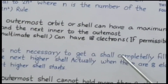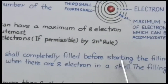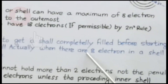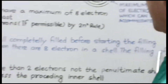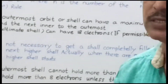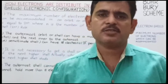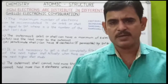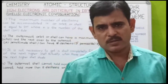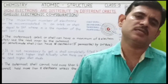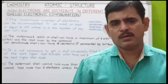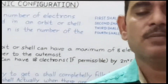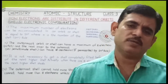Bohr का तीसरा नियम: it is not necessary to get a shell completely filled before starting the filling of the next higher shell. Actually, when there are 8 electrons in a shell, the filling of the next higher shell starts. जब तक कोई भी कक्षा अपने minimum और maximum number of electrons दोनों को समाविष्ट नहीं कर लेती, तब तक electrons distribute नहीं हो पाते।